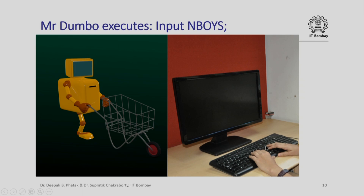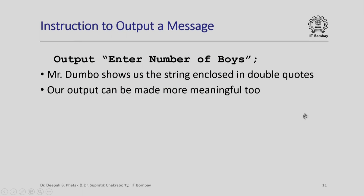We would like some indication — preferably an indication to appear on our screen — which suggests that Mr. Dumbo is waiting for some input value. We then introduce another instruction: an instruction to output a message. For example, if we write output "enter number of boys", this is a string of words enclosed in double quotes. This is almost like an output instruction, but instead of outputting the value of a named location, we are asking Mr. Dumbo to output just this string as is. What Mr. Dumbo does is he actually brings that string to us and shows that string on the monitor.